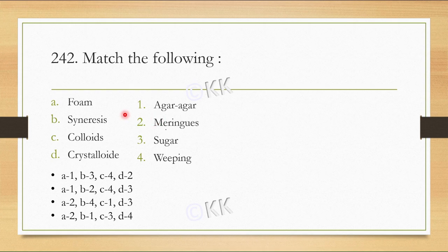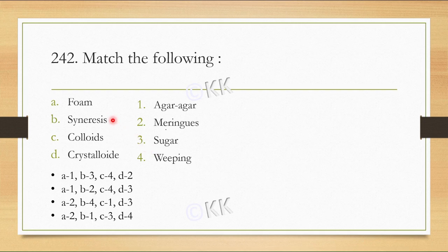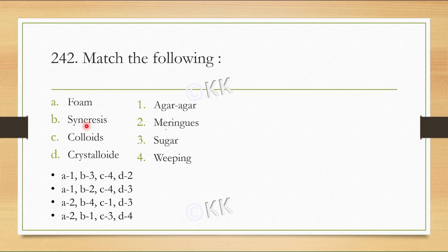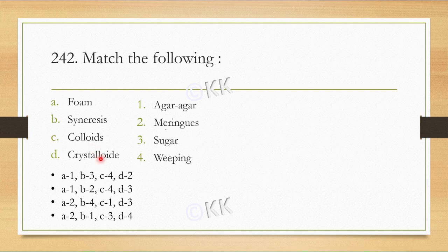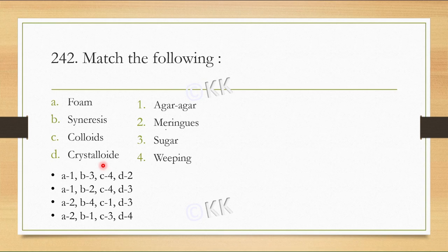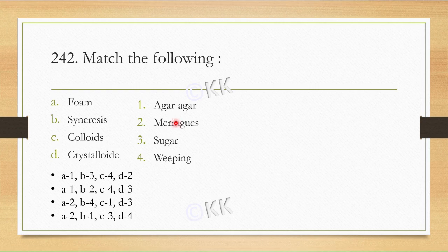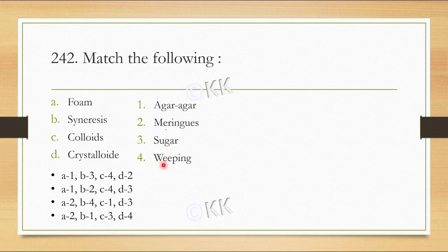Match the following. Left side is the item type and right side is the example. A is foam, B is syneresis, C is colloids, D is crystalloids. On the right side, example 1 is agar-agar, 2 is meringues, 3 is sugar, 4 is weeping.